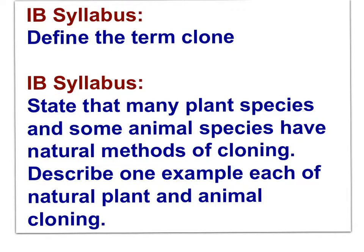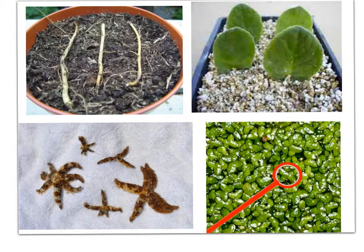IB syllabus: define clone as a group of genetically identical organisms derived from a single original parent cell, and state that many plant and some animal species have natural cloning methods. Plants are easily broken into fragments that grow into new individuals. Starfish, upon being broken, grow into new individuals — clones. Duckweed colonies are natural clones, all derived from a single original parent cell.